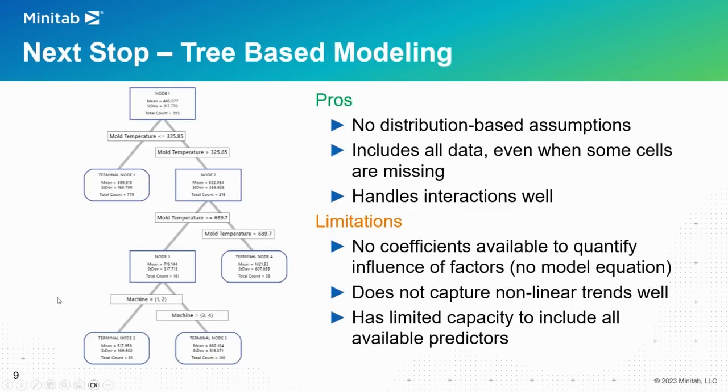The next step you might try is tree-based models. We have CART, we have random forests, we have TreeNet. The pros of those models: there's no distribution-based assumption, so it doesn't matter what shape your data is, it's going to work. Also, even if you have some cells missing, it's going to use all your rows to create your model. So you're not going to be missing some maybe important information in some of those rows that have some missing values. It's going to utilize everything. And these models handle interactions well. If there's interactions embedded among your inputs, it's adjusted and handled quite well.